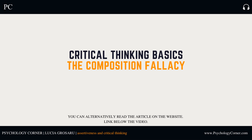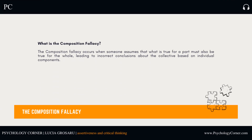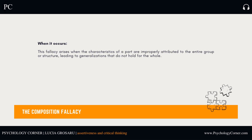What is the composition fallacy? The composition fallacy occurs when someone assumes that what is true for a part must also be true for the whole, leading to incorrect conclusions about the collective based on individual components. This fallacy arises when the characteristics of a part are improperly attributed to the entire group or structure, leading to generalizations that do not hold for the whole.